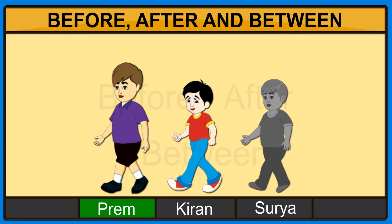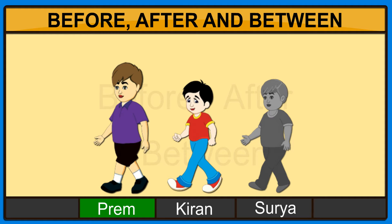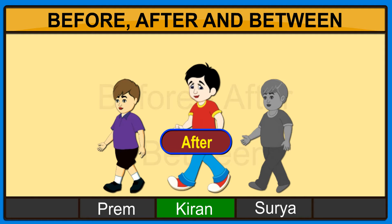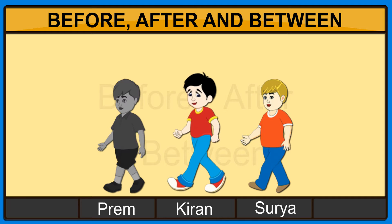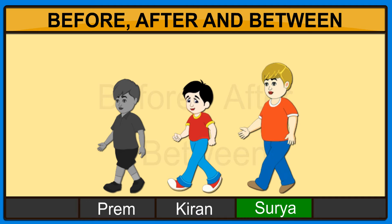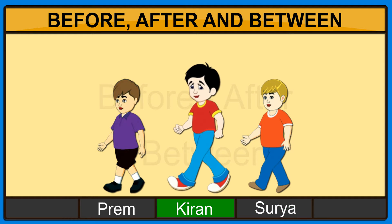Prem goes before Kiran. Kiran comes after Prem. Kiran goes before Surya. Surya comes after Kiran. Kiran is in between Prem and Surya.